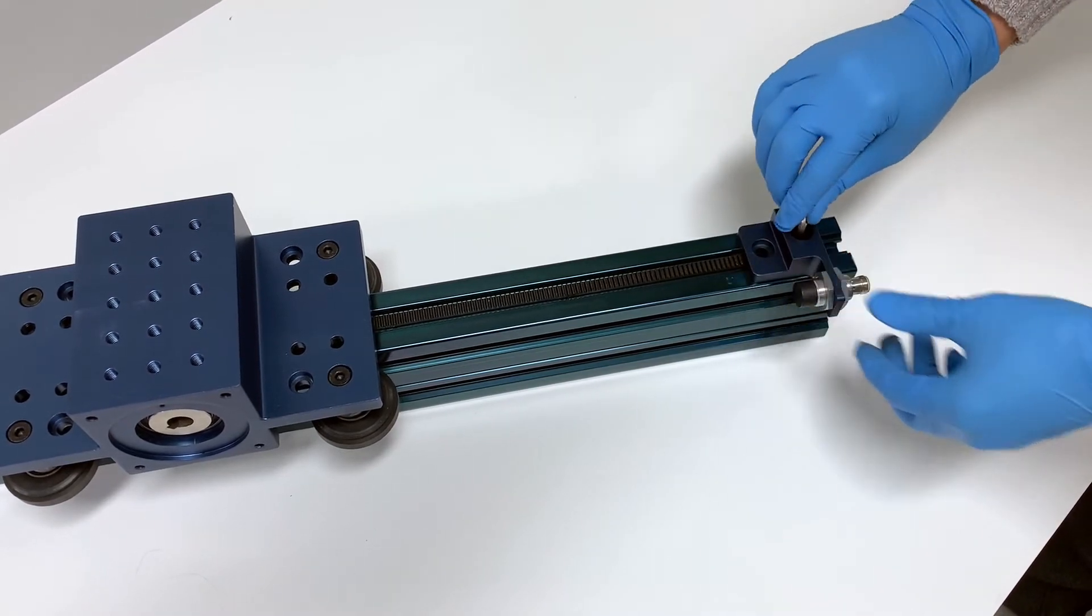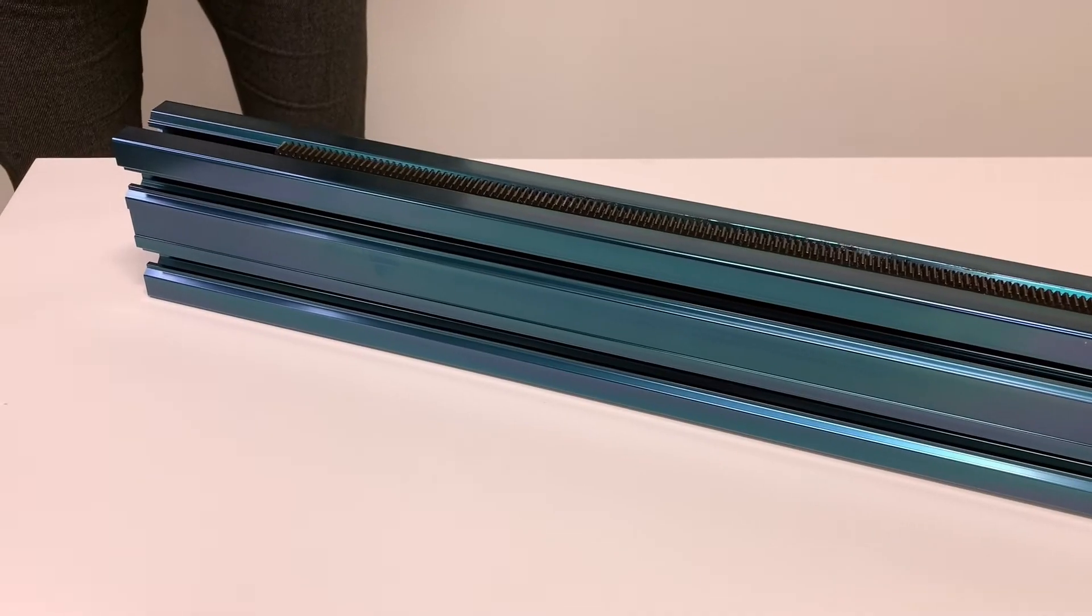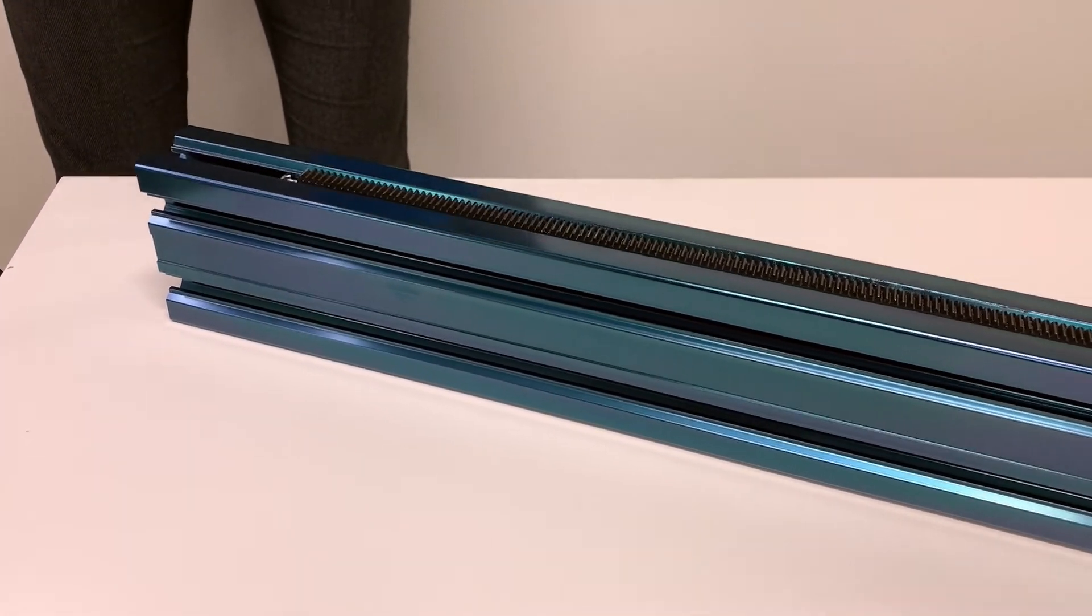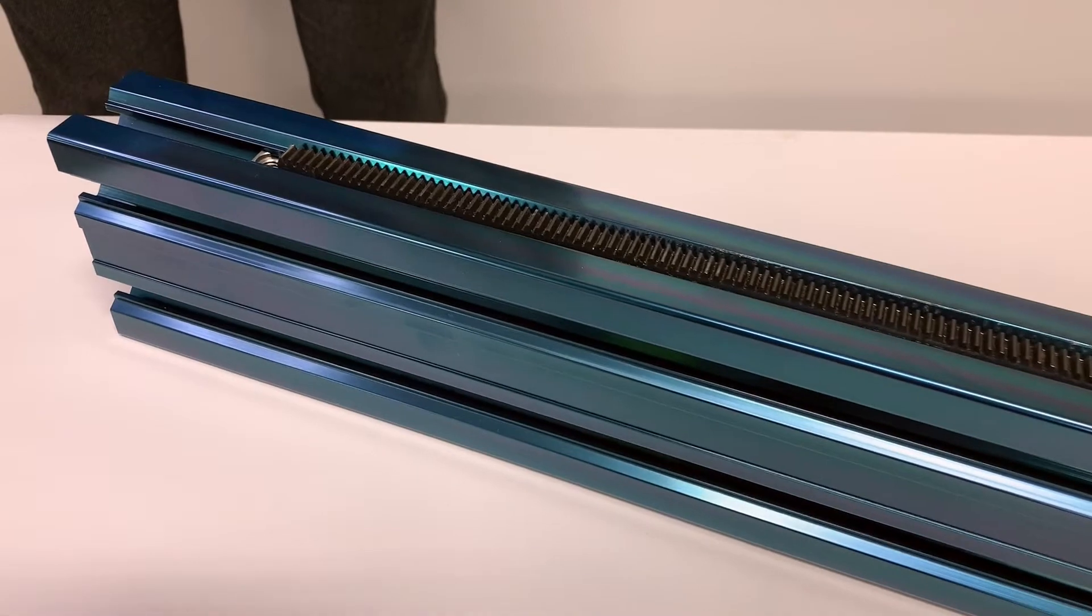Slide or drop the T-nut into the extrusion as shown, and use a 5mm Allen key and one M8 16mm screw to secure the end stop.